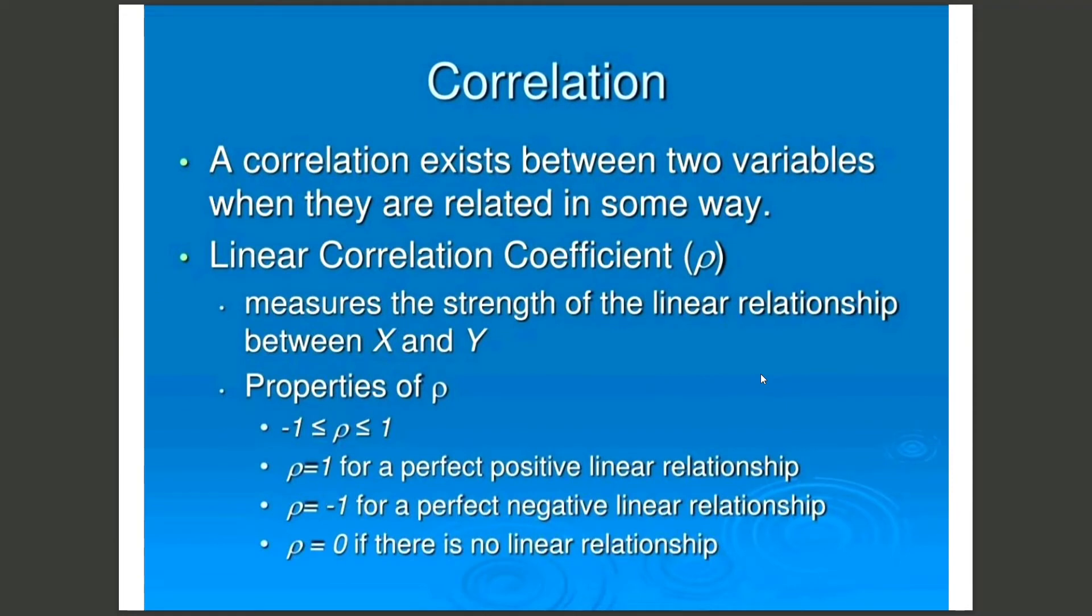A correlation exists between two variables when they are related in some way. The linear correlation coefficient, denoted by rho, measures the strength of the linear relationship between X and Y.